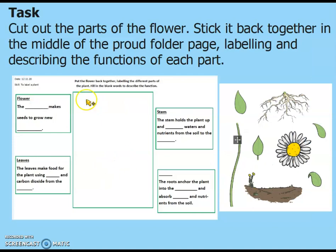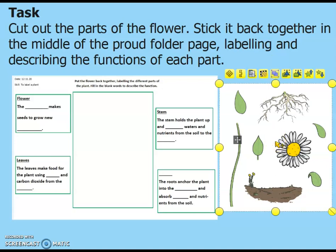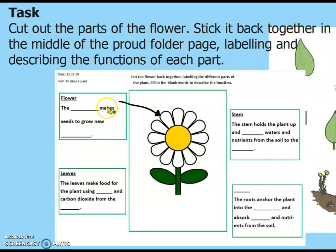For your main task, you're going to need the proud folder sheet and the flower that you've got to cut up from your pack. The first job is to cut out the parts of the flower really neatly, then stick them together in the middle of your proud folder sheet so it ends up looking something like this. Then you're going to label each part — draw arrows from the picture to the caption. Blue group, you're going to write in the part of the plant. Green group, you've got some blanks to fill in with missing words. Everyone else, you're going to write the function of each part of the flower.